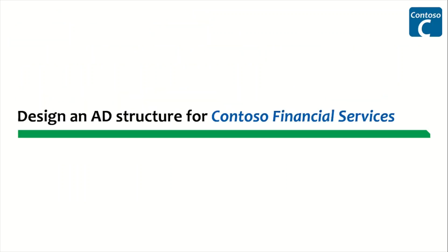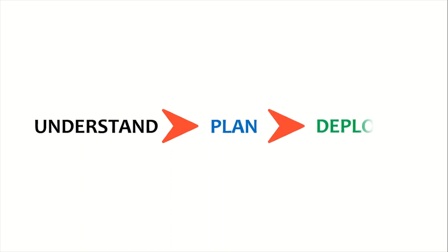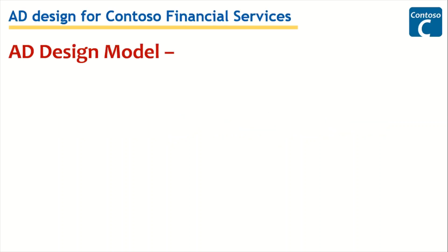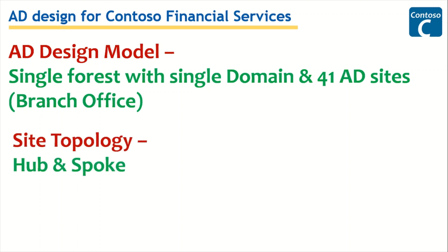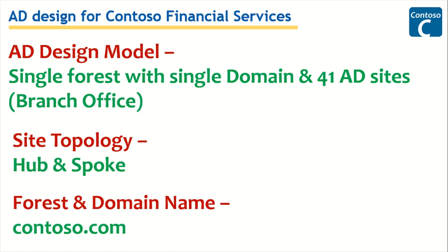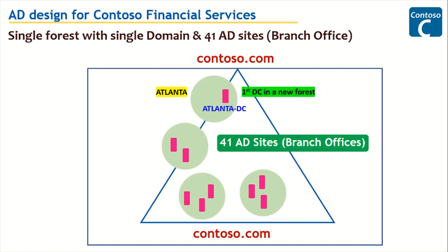Now, designing the Active Directory structure for Contoso Financial Services — we understand, then we plan, then we deploy. The proposed design is: a single forest with a single domain, 41 Active Directory sites using a hub-and-spoke site topology (to be discussed further in our replication sessions), and the forest and domain name is contoso.com. This is the design proposed for Contoso Financial Services.